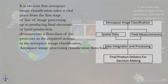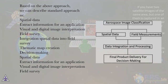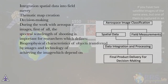Aerospace Image Processing Classification Flowchart. Based on the above approach, we can describe the standard approach as: Spatial data, Extract information for an application, Visual and digital image interpretation, Field survey, Integration of spatial data into field survey, Thematic map creation, and Decision making.